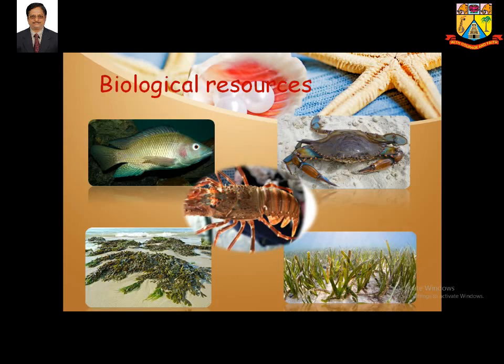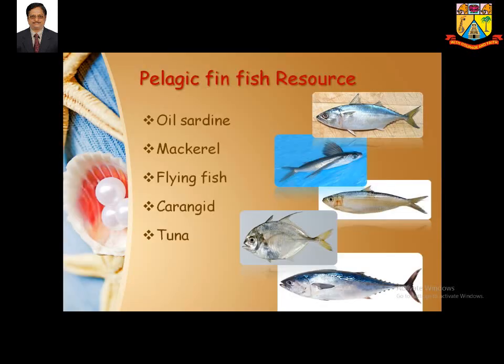Living resources start from fish, crab, seaweed, and more. Fishes contain omega-3 fatty acids, are easily digestible, and easy to cook compared to mutton, chicken, or other non-vegetarian food items. Fish is one of the most important foods for human beings throughout the world.